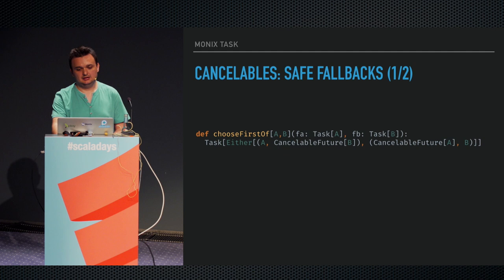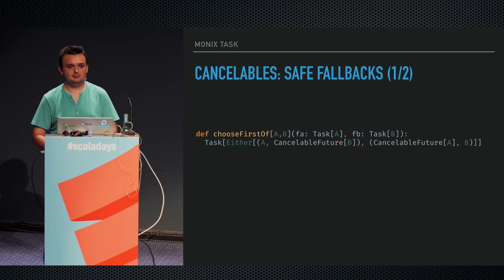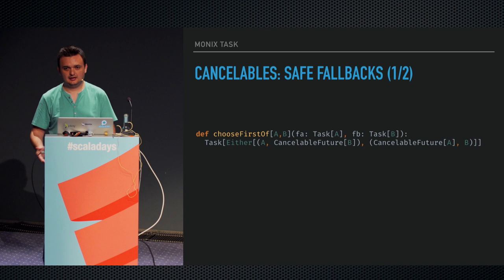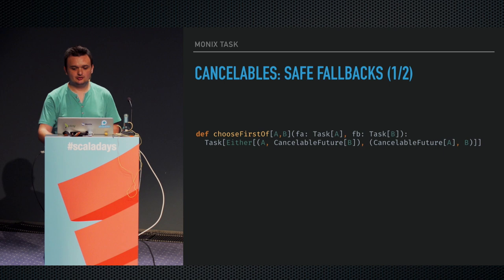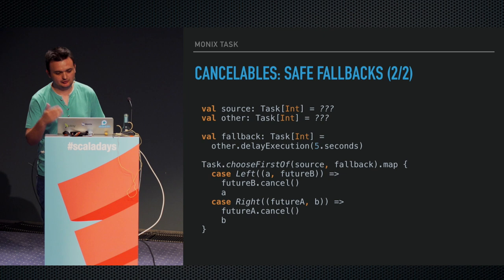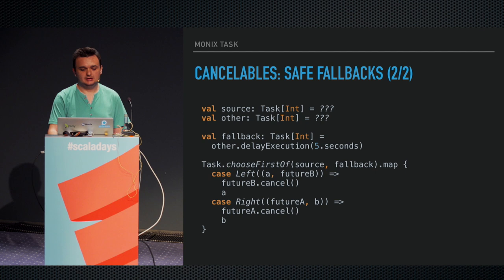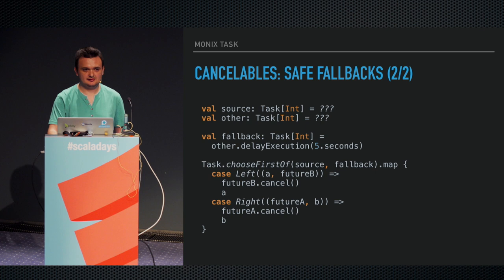In the task create implementation you return something that knows how to cancel your computation. This is optional — some things cannot be canceled, which is fine. This is opt-in. This is useful because in implementations like chooseFirstOf, which creates a race condition between two tasks and picks the winner, you might want to cancel the other one. The task implementation's chooseFirstOf gives you the winner and the cancelable future of the other one, so you can choose to cancel it or maybe use its result. chooseFirstOf and then mapping over it and canceling the loser is how timeout is basically implemented.